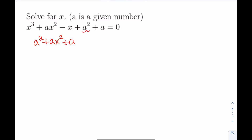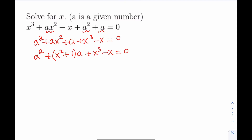So we've taken care of those terms, and then what we have left is x cubed minus x, and this is all going to equal zero. What I'm going to do is write this as a quadratic in a so that I can use the quadratic formula. Let's arrange the terms that have a in them. So this is going to be x squared plus 1 times the quantity a, and then x cubed minus x is just going to be our constant in this case. So we're going to treat x cubed minus x as a constant and a as the variable.